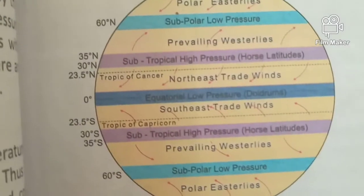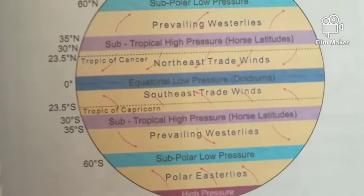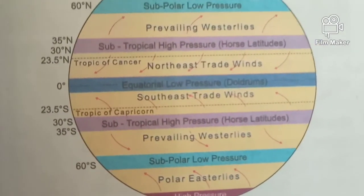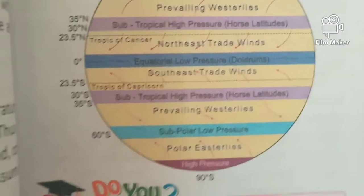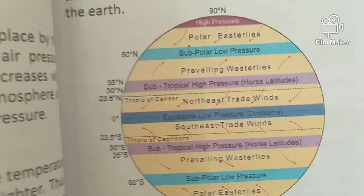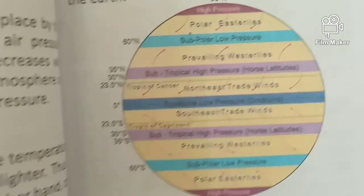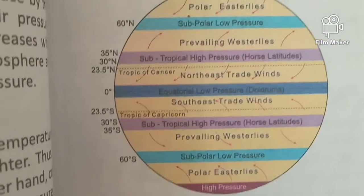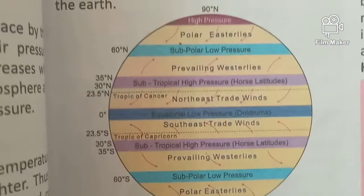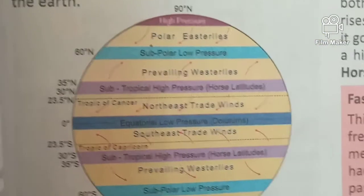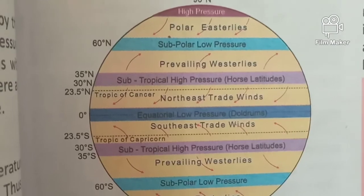In the next video, we will cover the remaining topics: equatorial low pressure belts, subtropical high pressure belts, and polar high belts in descriptive detail, along with wind and types of wind. Read the chapter once again and watch this video attentively.